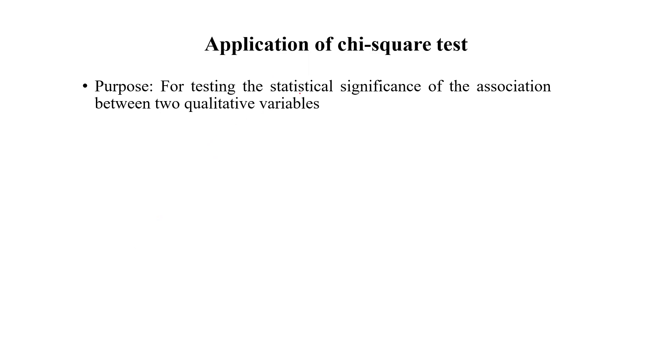So what is the purpose of chi-squared test? Where we apply the chi-squared test? The purpose is for testing the statistical significance of the association between two qualitative variables.